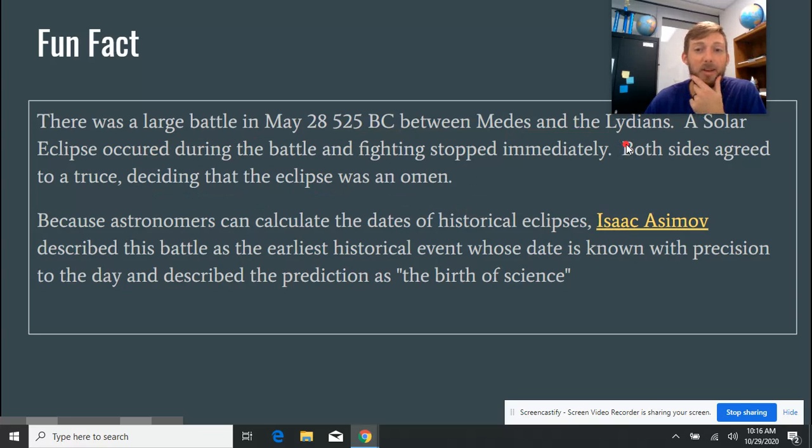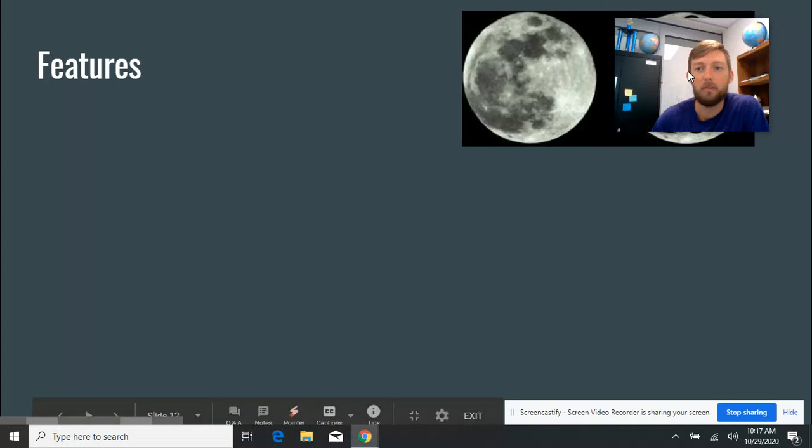But because we can tell exactly when these lunar eclipses are, because they're mathematically in the same pattern that they've been for billions of years, this guy, Isaac Asimov, he describes the battle as the earliest historical event to which the date is known with precision, because we know what happened at this eclipse during this time. There's not that many solar eclipses, so we can pinpoint exactly when this battle happened, which is pretty cool. He described it as the birth of science.